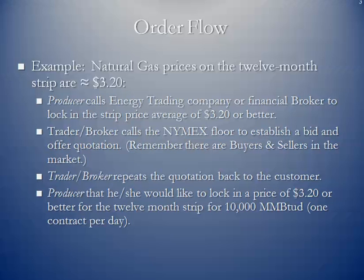There is a producer of natural gas who's interested in selling some natural gas, and they like this price. So they're going to call either some energy trading company that they do business with, or perhaps a financial broker who can execute contracts on the floor of the New York Mercantile Exchange, or electronically. They tell them they'd be interested in locking in that strip price average of $3.20, or hopefully even better. The trader or broker then calls the NYMEX floor to establish a bid and offer quotation. There are buyers and sellers in the market, so the $3.20 may not be there right at the moment, but they'll find out what prices the market is willing to purchase and sell at — what we call a bid-ask spread, or a two-way.